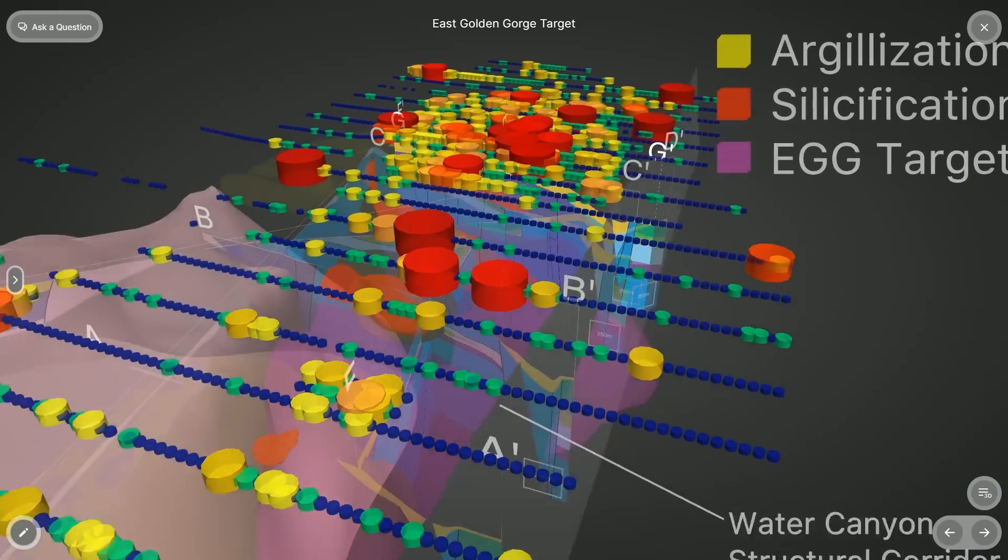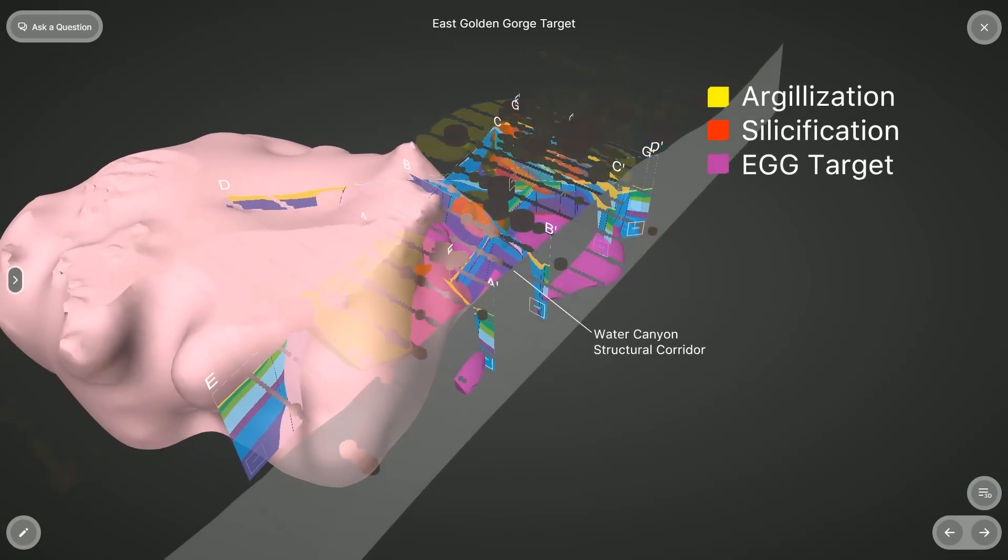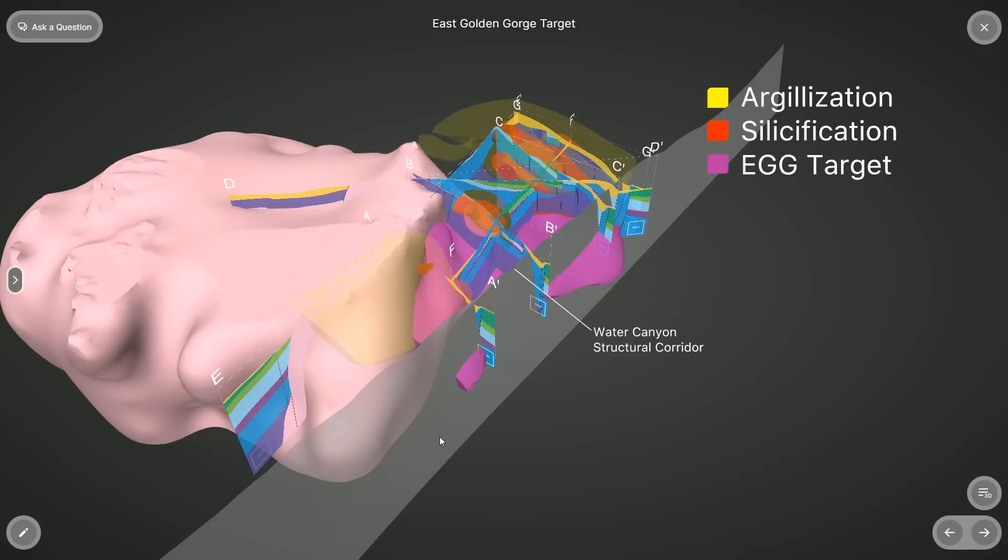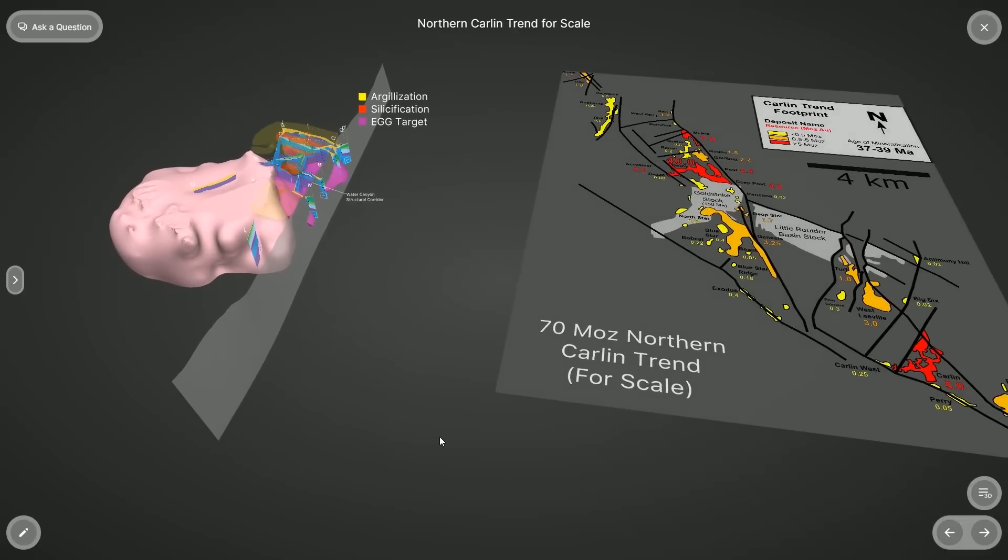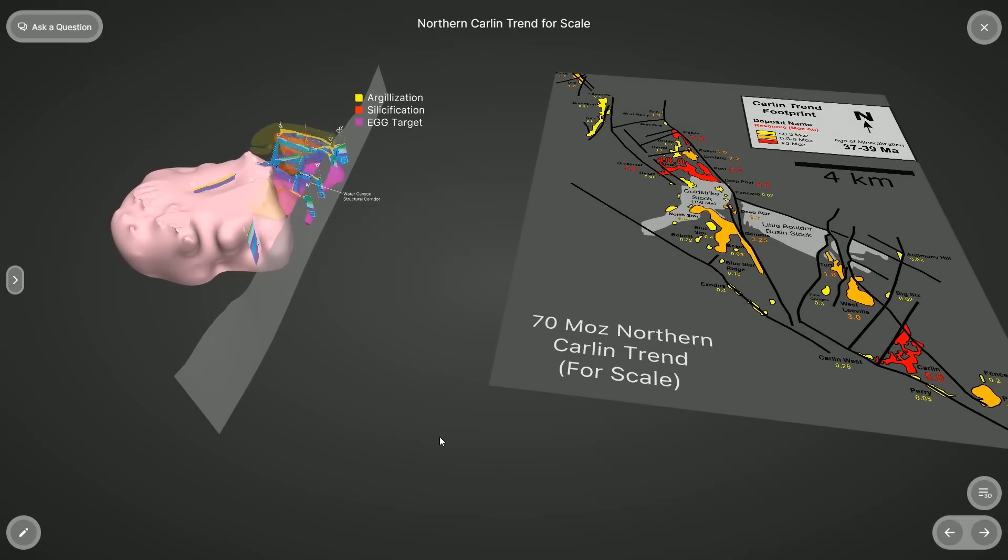While other projects in Nevada exhibit many of these same ingredients, what we believe underpins the significance of this project is its scale, which is directly comparable to the mineral systems responsible for Nevada's three largest Carlin type districts, each of which hosts more than 50 million ounces of gold.